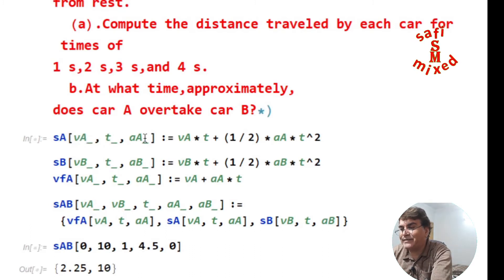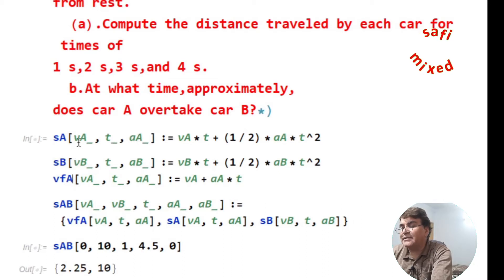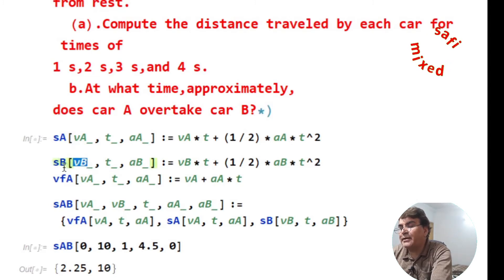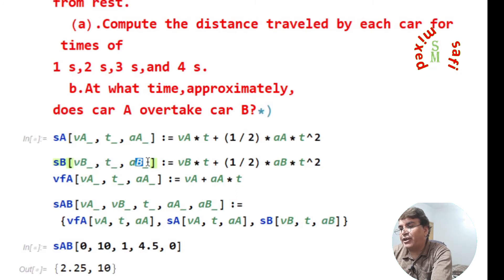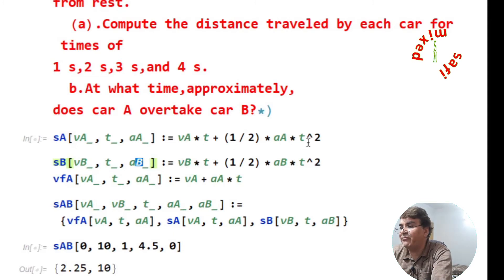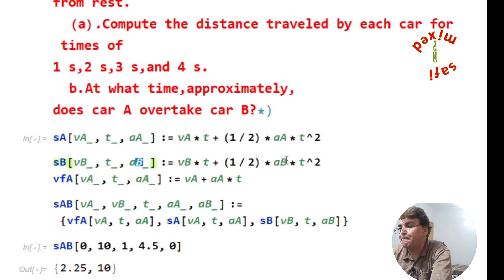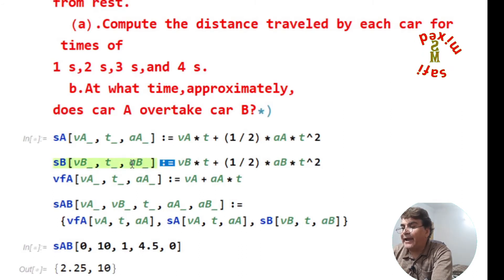The same I do for particle B, where instead of vA I write vB. So the distance covered by car B is a function of its velocity, time, and its acceleration. Though this acceleration is zero, I will set it equal to zero later on. At the moment I am writing it as a general equation, the same form as for particle A, only with different notation: vB and aB.